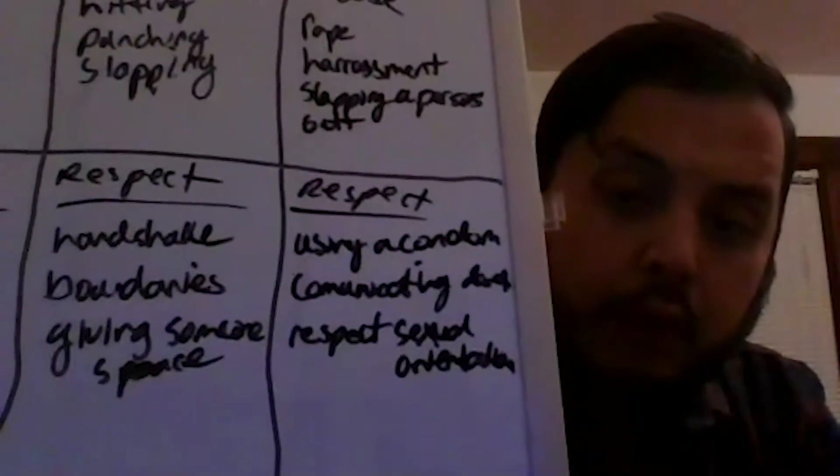Physical respect — a lot of times we see handshake on this list. Boundaries also ends up on this list a lot, as well as giving someone space. And then sexual respect: using a condom, communicating desires, and respecting sexual orientation. These are all examples of abuse and respect.